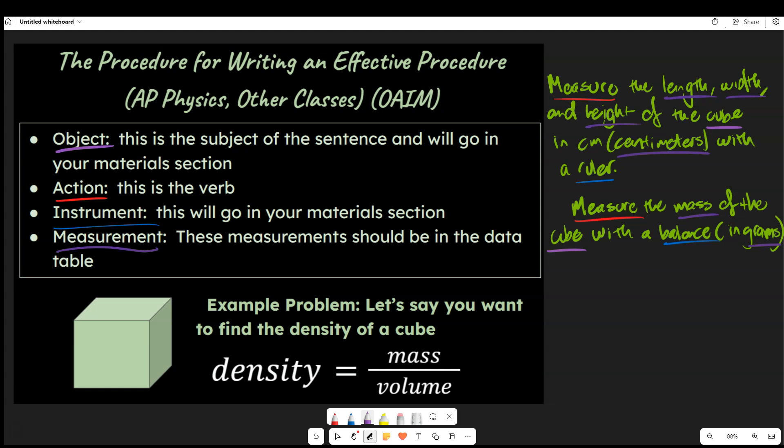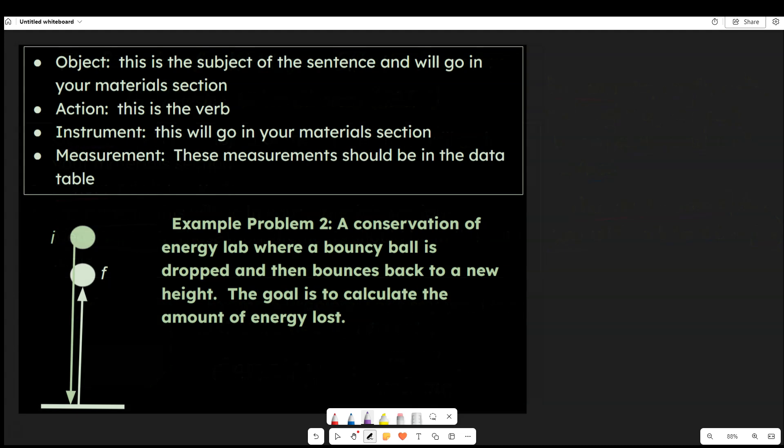All right, let's try another problem together. And so this problem says a conservation of energy lab where a bouncy ball is dropped and then bounces back to a new height. The goal is to calculate the amount of energy lost. So let's think through this. If you want, pause for a second and think about how you would write out the procedure for this little experiment we're doing.